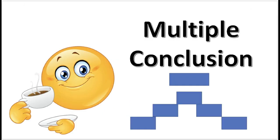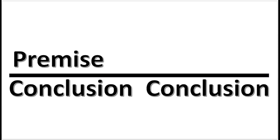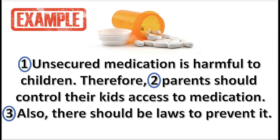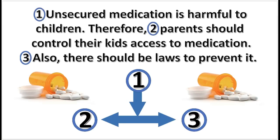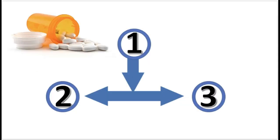The last basic pattern is called multiple conclusion. This pattern is used when a single premise supports two or more conclusions. Here is an example. Such an occurrence results in multiple arguments, but we can diagram them as if they were a single argument. The diagram asserts that statement 1 supports both statements 2 and 3.